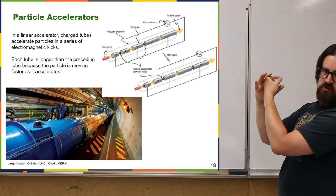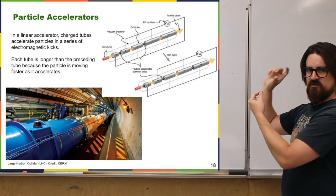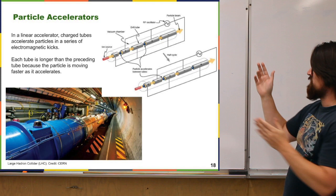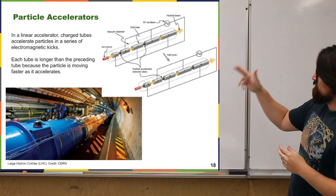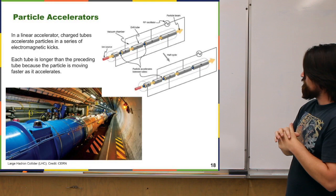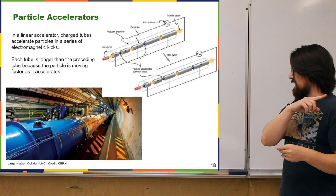So the particle gets attracted to the first tube and accelerates. Then once it goes through, you switch the voltage — you switch the sign of the charge — and that's where you have this radio frequency oscillator, meaning we're switching the sign of these charged tubes continuously. The next tube is now also attracting it, so it gets accelerated again. In each of the gaps in between the tubes, your particle is getting attracted to the next tube and repulsed by the last one. So in each of these empty spaces, your particle keeps getting these kicks — accelerating, accelerating, accelerating. The tubes need to be longer and longer because the particles go faster and faster. In this way you can continually boost the particle along this linear path.